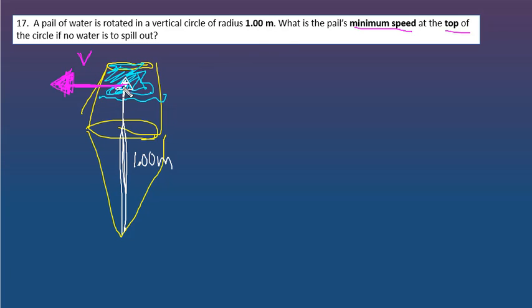So here's your bucket of water going in this circle that's bigger than this page of radius one. Okay, and we want the minimum speed if no water is to spill out. And so basically, let's make that red.